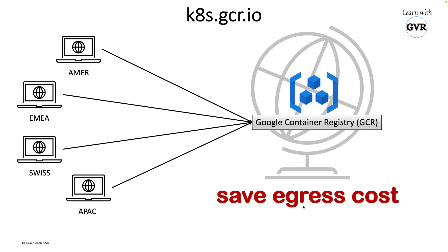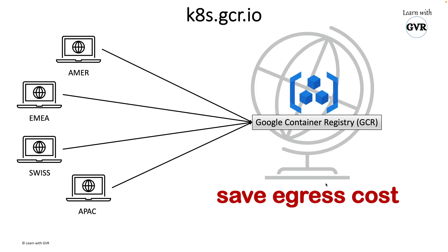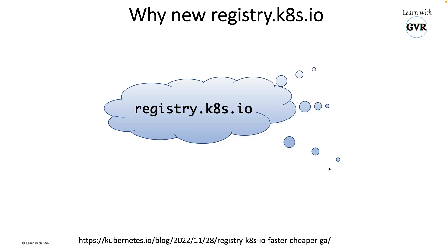The disadvantage was too much egress cost. The container registry resides in the US, but if Asia-Pacific or Europe or Switzerland pulls images, there is network egress cost that Google had to bear. Since Kubernetes is open source, if you look at the CNCF news from June 2021, Google recommitted 3 million dollars' worth of service to Kubernetes to cover this egress cost.